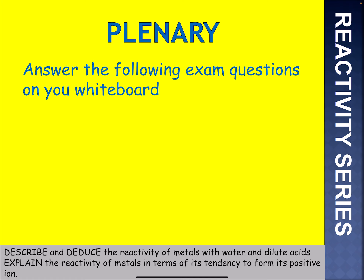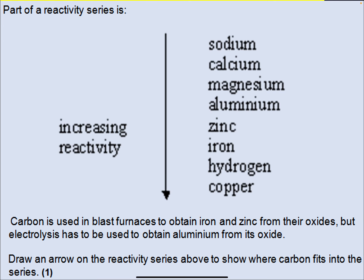Answer the following GCSE questions. You've got sodium at the top, copper, increasing in reactivity. Carbon is used in a blast furnace to obtain iron and zinc from the oxides, but electrolysis has to be used to obtain aluminium from its oxides. Draw an arrow on the reactivity series to show where carbon fits in — worth one mark. What you should have got is that carbon fits in between aluminium and zinc.